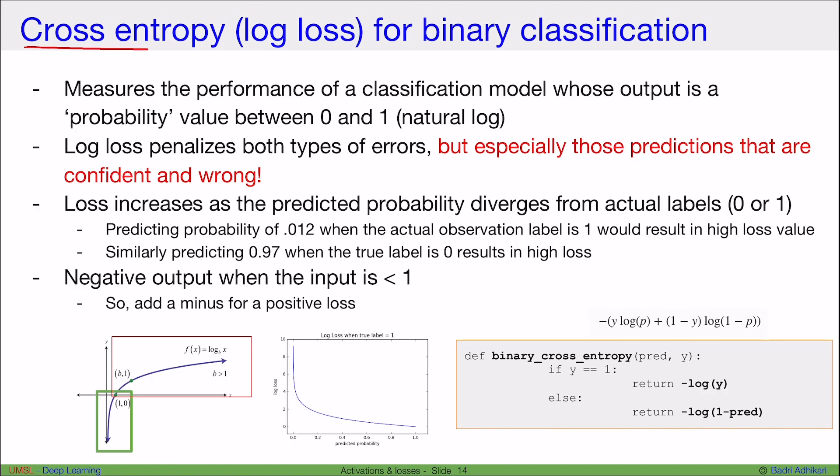Now let us look at the cross-entropy binary cross-entropy loss for binary classification. Binary cross-entropy loss measures the performance of a classification model whose output is a probability, so the output should be a continuous number between zero and one.